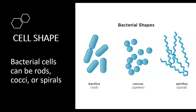Bacteria come in three different shapes. Rod-shaped bacteria are called bacillus or bacilli. Spherical bacteria are called coccus or cocci. And spiral-shaped bacteria are called spirillus or spirula. Remember these and practice looking at them under the microscope, because sometimes — for example, when bacillus is dividing — it can kind of look like coccus. You have to get your eyes used to identifying these different shapes, as identifying the shape of the bacteria is very important when trying to identify a particular type.